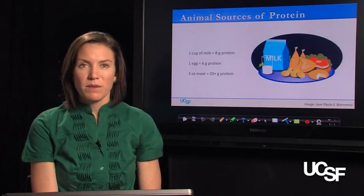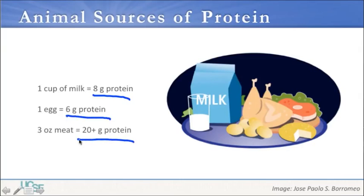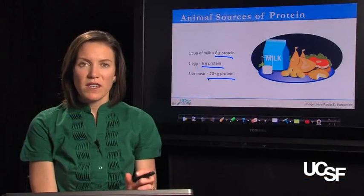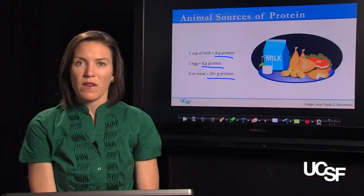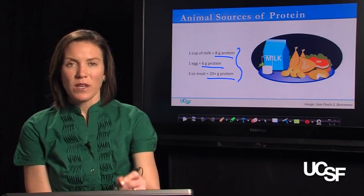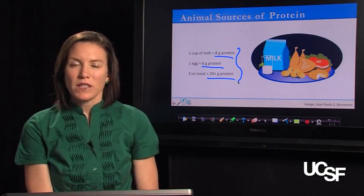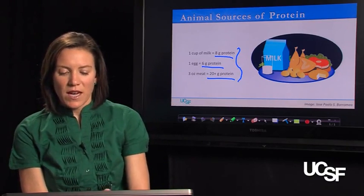Animal sources of protein include milk — a cup gives you 8 grams of protein — an egg gives you about 6 grams, and 3 ounces of meat gives you about 20 grams of protein. So in a very small amount of animal foods in your diet, you can amass a pretty decent amount of protein.